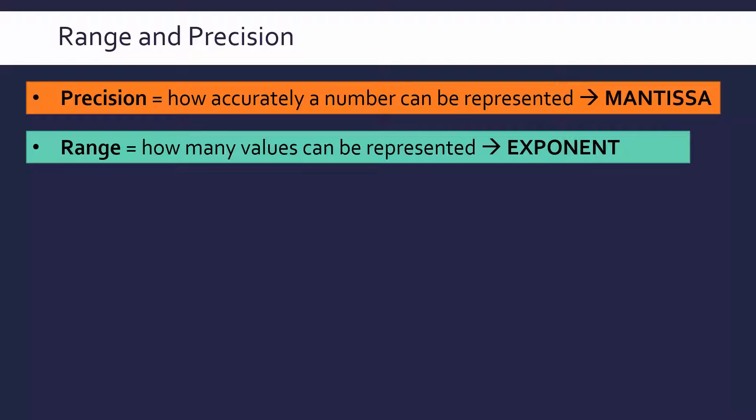But we do have a trade-off versus range. So range is referring to how many values are we able to represent in our floating point notation, and this is determined by the size of our exponent. So when I say size of mantissa or exponent, I mean how long they are, how many bits we've got allocated. The more bits we've got, the bigger precision and the bigger range we can have.